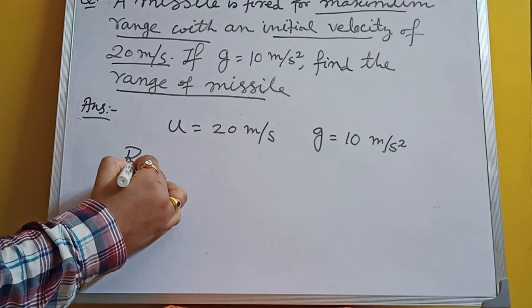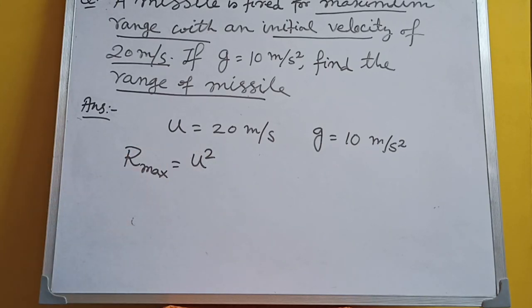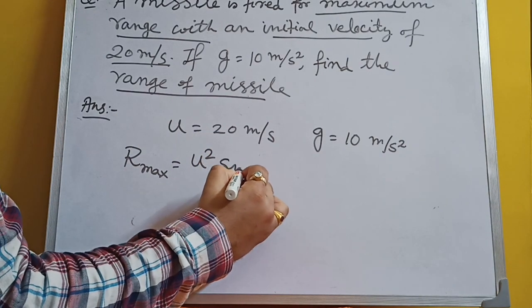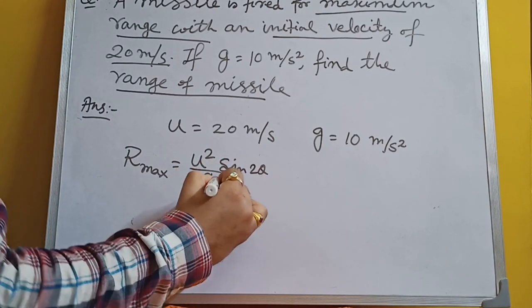And what is the formula of maximum range? R max is equal to U squared sin 2 theta by G.